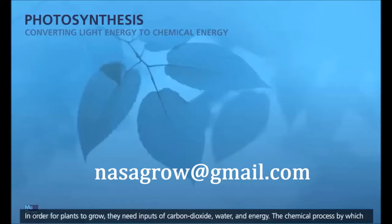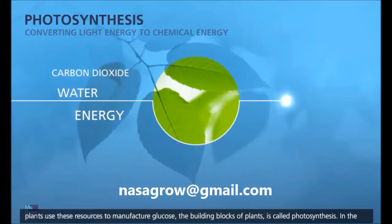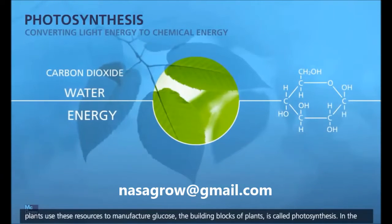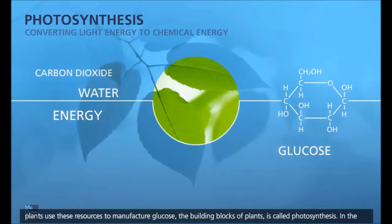In order for plants to grow, they need inputs of carbon dioxide, water, and energy. The chemical process by which plants use these resources to manufacture glucose, the building blocks of plants, is called photosynthesis.